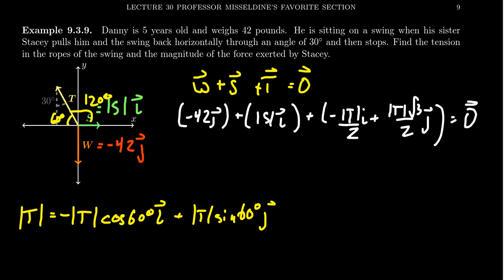And then combining like terms, that is, we can add together the horizontal components. We can add together the vertical components. This is the same thing as, well, we have the magnitude of S. And then we have minus the magnitude of T over 2.